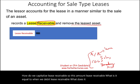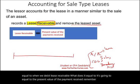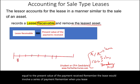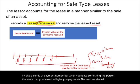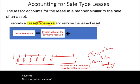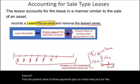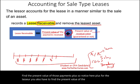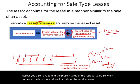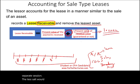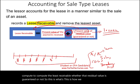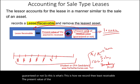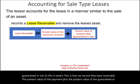The lease receivable is capitalized at the present value of the lease payments to be received, plus — importantly for the lessor — the present value of the residual value, whether guaranteed or unguaranteed. So: Lease Receivable = PV of lease payments + PV of residual value (guaranteed or unguaranteed). The lessor always includes the present value of the residual value in computing the lease receivable.